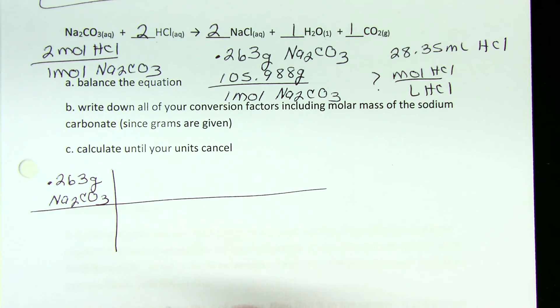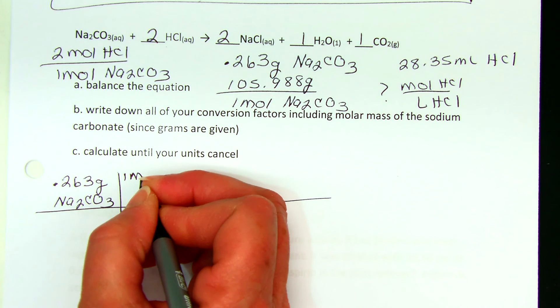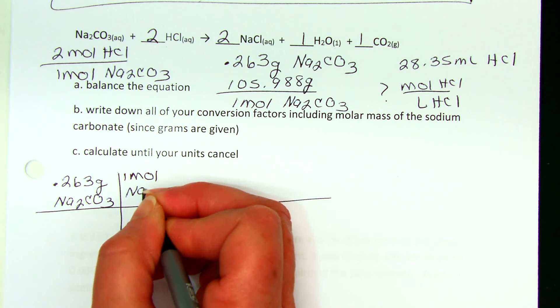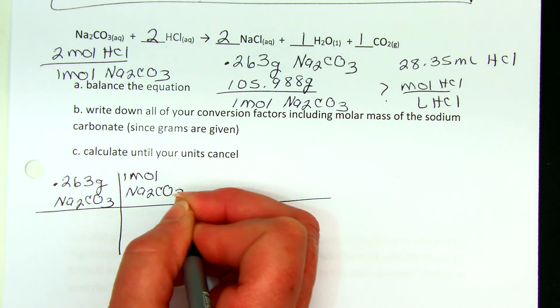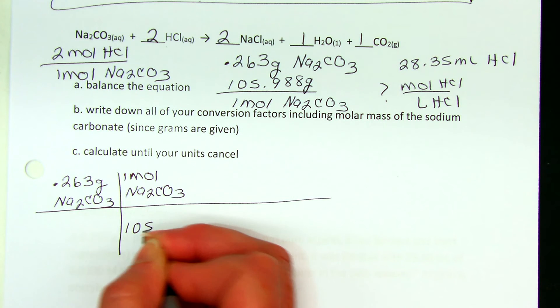Molar mass—change grams to moles. One mole of sodium carbonate is 105.988 grams of sodium carbonate.